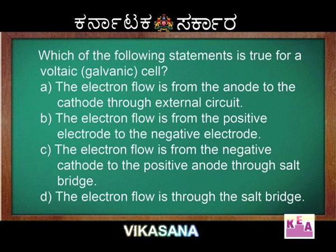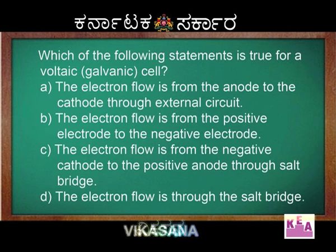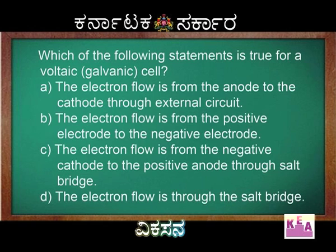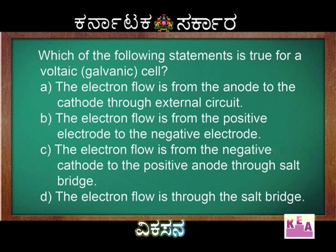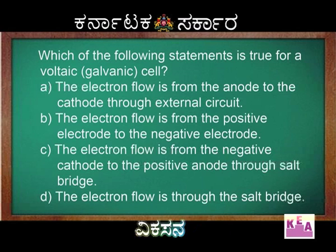Which of the following statements is true for a voltaic or galvanic cell? Option A: the electron flow is from the anode to the cathode through the external circuit. Option B: electron flow is from positive electrode to the negative electrode. Option C: the electron flow is from the negative electrode to the positive anode through the salt bridge.